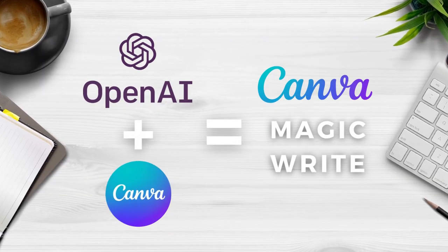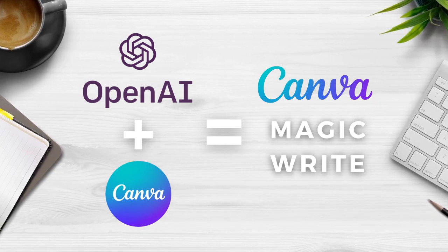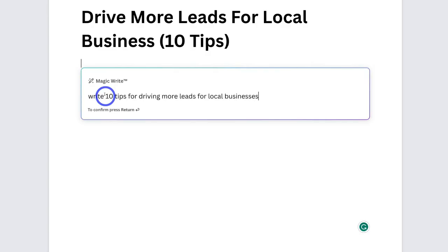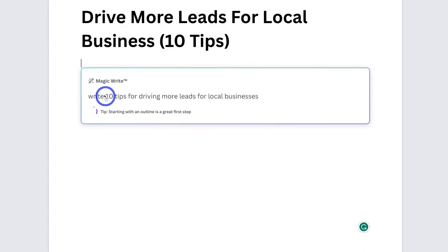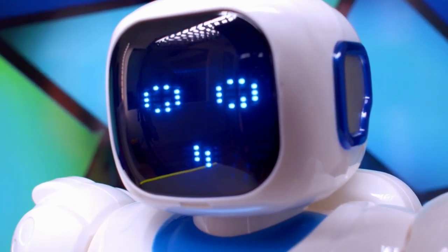Canva has recently released an AI feature that uses OpenAI called MagicWrite. This is essentially an AI content writer or text generator. Canva is known for its easy-to-use yet powerful design and content creation capabilities, and now you can simply create written content in minutes inside Canva with the support of AI.